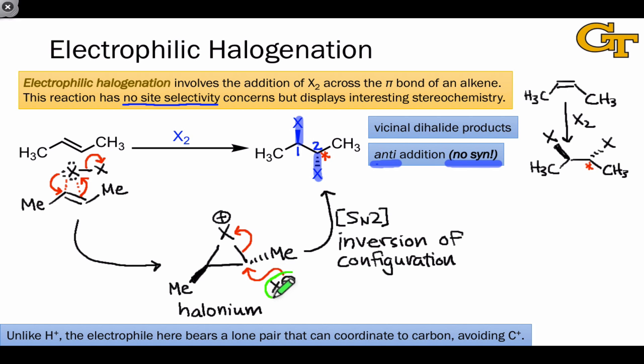For this reason, the nucleophilic halogen atom ends up on the opposite side of the plane formed by the carbons of the alkene from the electrophilic halogen atom.